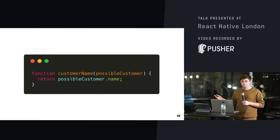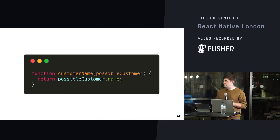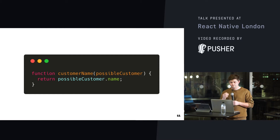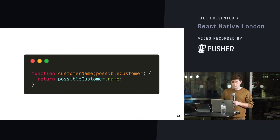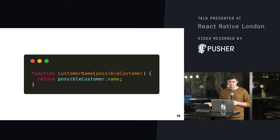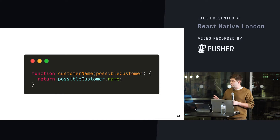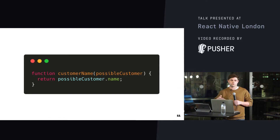Here's a really simple function. Take a quick look and see if you can find the error. As someone shouted out, the possible customer could be null, and therefore when you try to access the name property on it, it's going to crash at runtime. This code is completely valid and it will work. And actually if you were writing this code properly you wouldn't call it 'possible customer' — you'd just call it 'customer', which would have made the error a little bit less obvious.